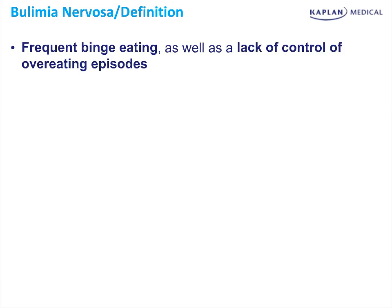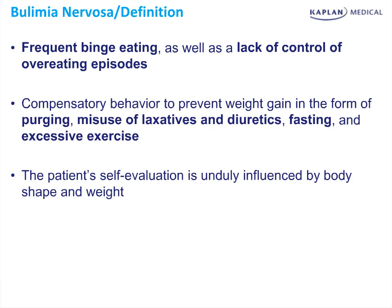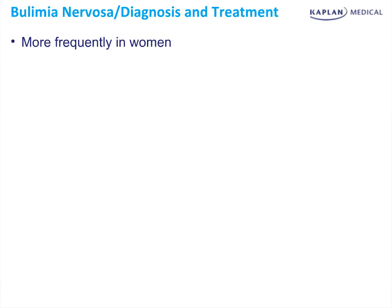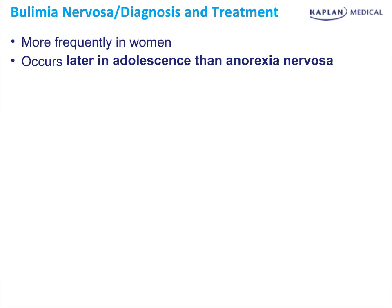In contrast, bulimia nervosa involves frequent binge eating and a lack of control during overeating episodes. These patients use compensatory behavior to prevent weight gain: purging, misuse of laxatives, diuretics, fasting, or excessive exercise. The key difference from anorexia is that bulimic patients do not have a low BMI. Bulimia occurs later in adolescence than anorexia and most patients are normal weight.